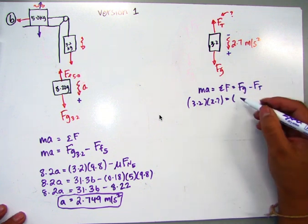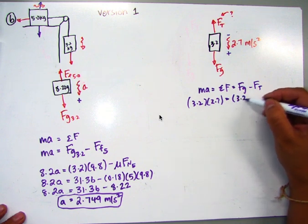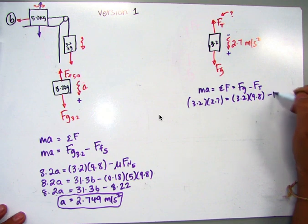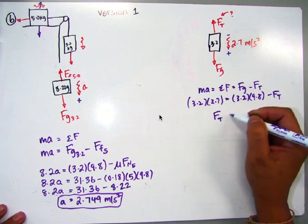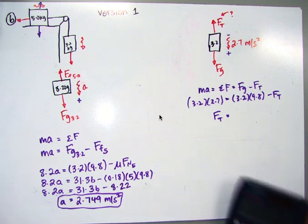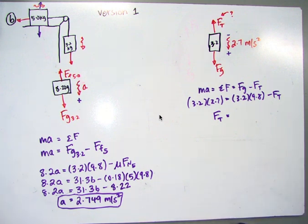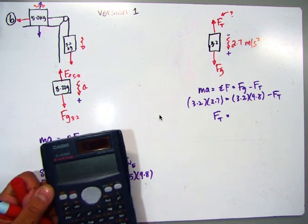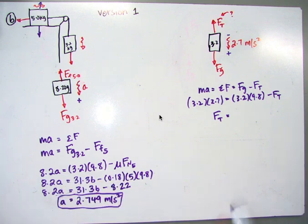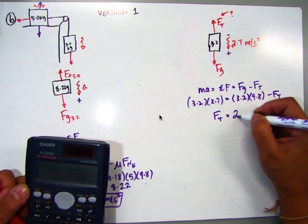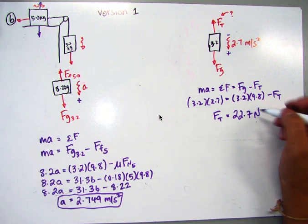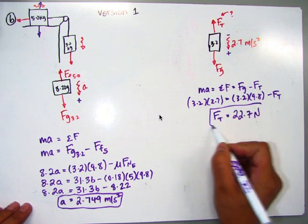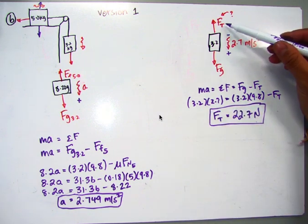So I can put in 3.2 times 2.7 equals, I'm going to take my down direction to be positive because it's accelerating down. So then Fg, I can say this just equals Fg minus Ft. So doing that, Fg is just 3.2 times 9.8 minus Ft. So solving for Ft, I'll do it to make sure this time we've got it correct. We get 22.7, 22.7 newtons or 23 newtons. You can round that to two decimal places and make it 23, like on the sheet.